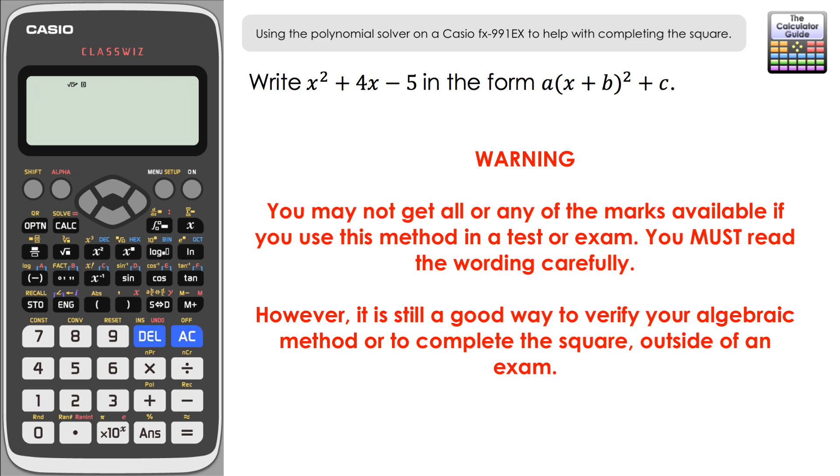If we have a look at the question we've got here, write x² + 4x - 5 in the form a(x + b)² + c completed square form, then you would be okay to use this method. If it says show how to put that into that particular form or use an algebraic method or something like that, then you can't use this form directly as it's obviously not going to give you the marks for that question, but it is a good verification technique as well if you want to check your answer at the end once you've completed all the steps.